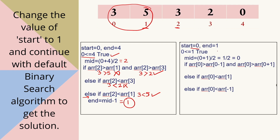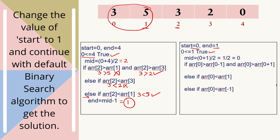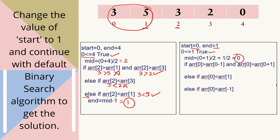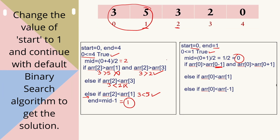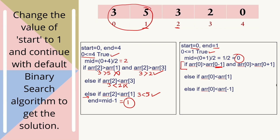In the next step, start is still 0 and end is now 1. The condition start ≤ end is true, so we recalculate mid = (0 + 1) / 2 = 0. Now there is a very big issue: with mid = 0, we are checking if the element at index 0 is greater than the element at its previous index, which would be index -1. This index does not exist in the array.